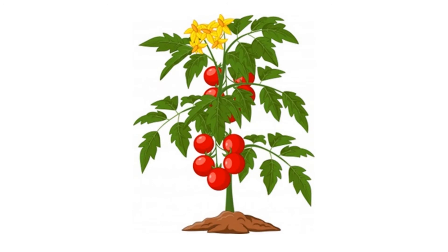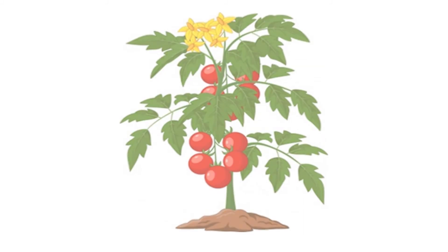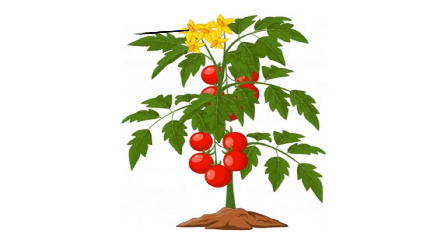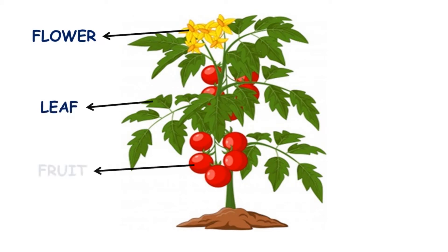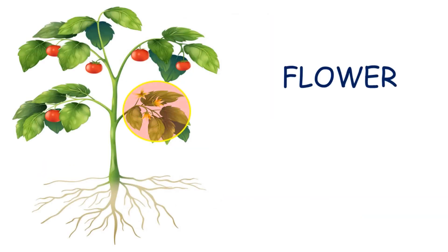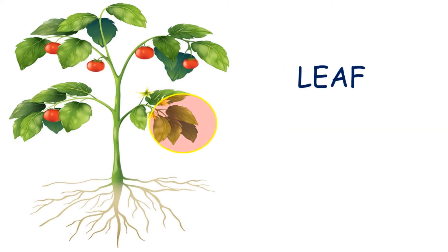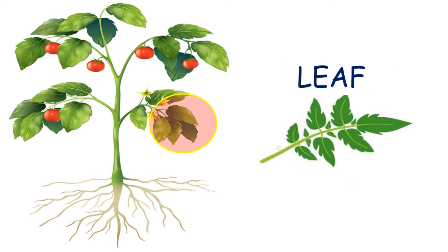Basically, plants are divided into five parts, and those parts are helpful for the growth of plants: flower, leaf, fruit, stem, and root. Flowers are the parts of plants that make seeds and fruits. Flowers are colorful.